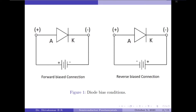When the diode anode is connected to the positive terminal of the battery and cathode is connected to the negative terminal, such a connection is called the forward bias connection. On the other hand, when the anode is connected to the negative terminal of the battery and cathode is connected to the positive terminal, this connection is named as reverse bias connection.